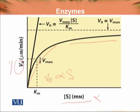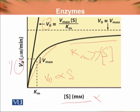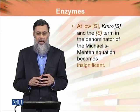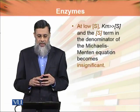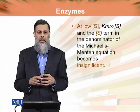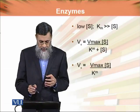Now we are looking at when substrate concentration is very very low compared to Km. If we define Km and the substrate concentration is very very low, then V0 becomes equal to Vmax multiplied by substrate concentration divided by Km. As we increase substrate concentration, V0 increases directly proportionally. The substrate concentration term in the denominator of the Michaelis-Menten equation becomes insignificant in this condition.